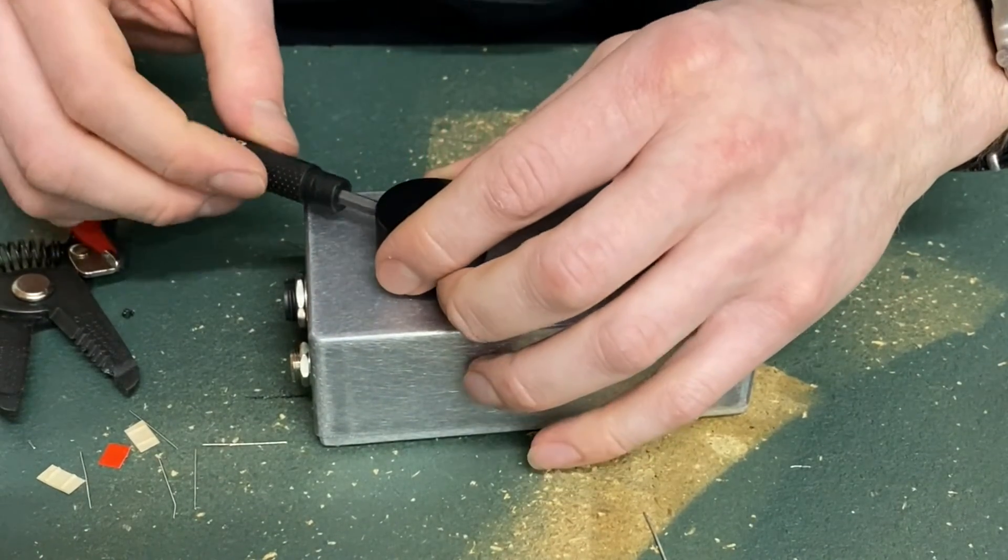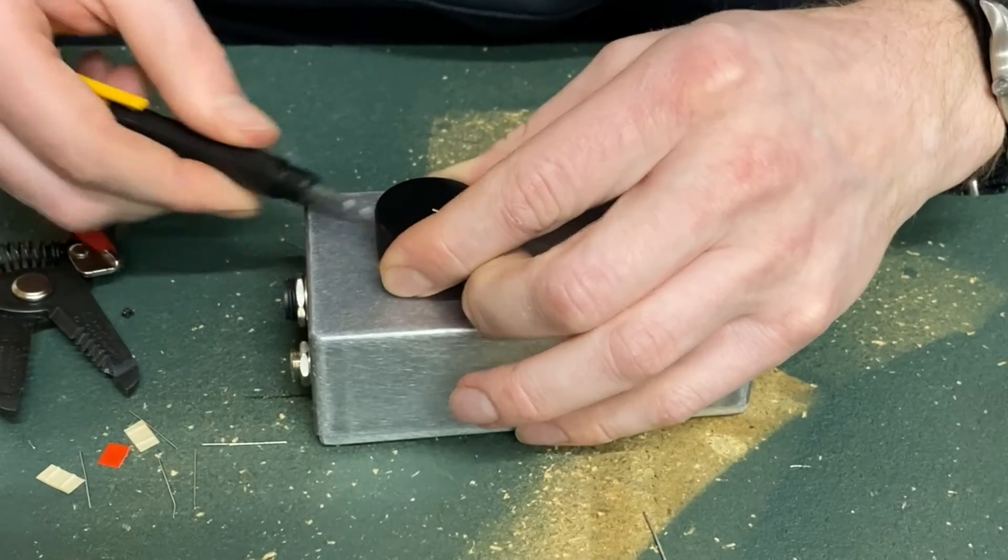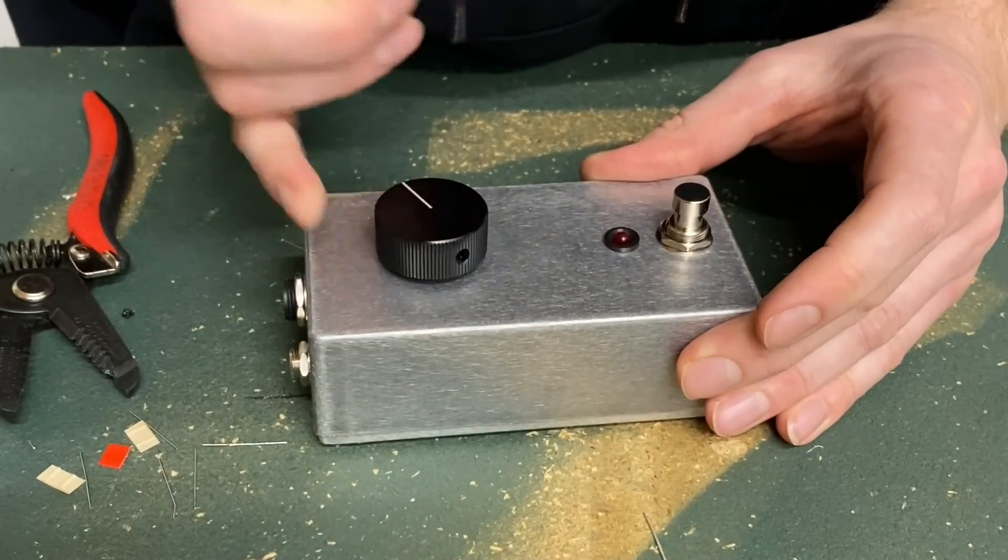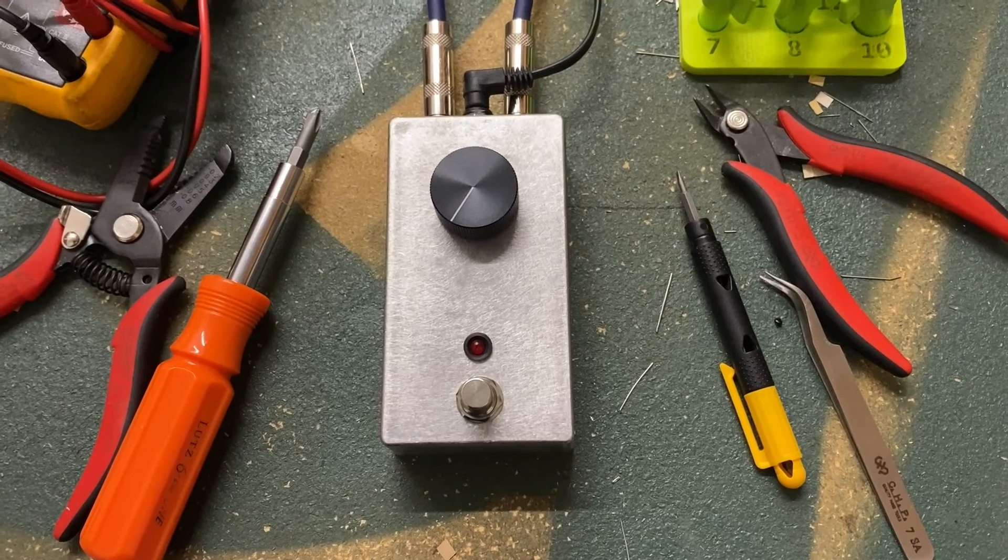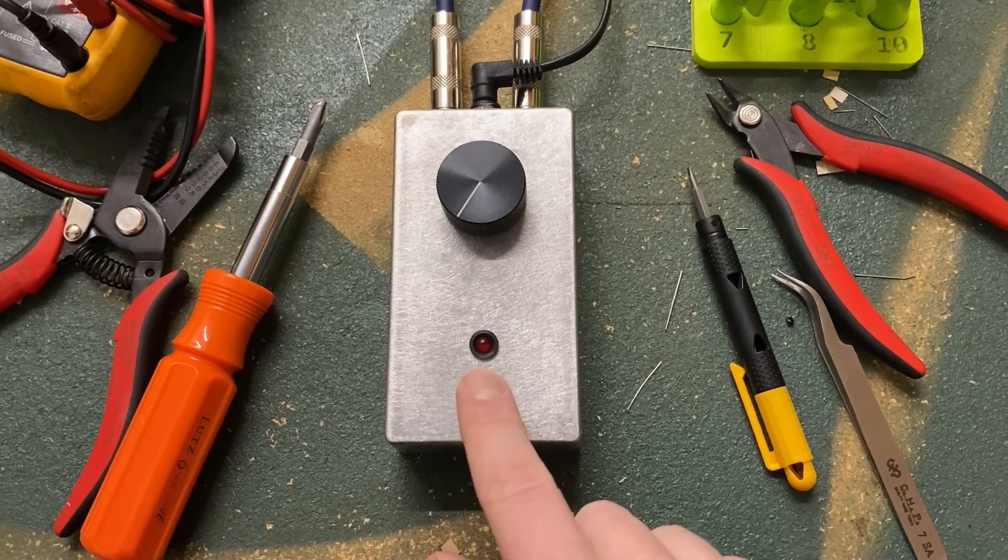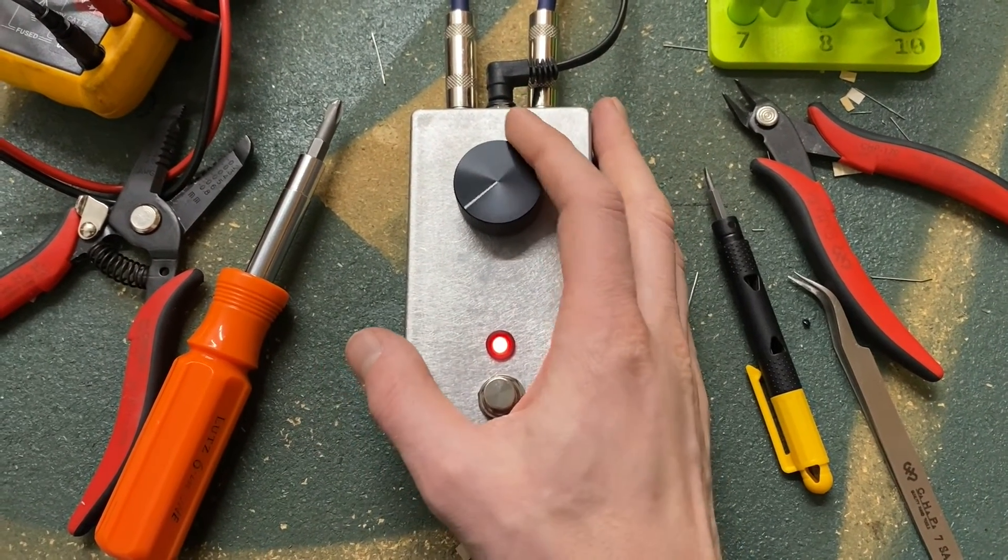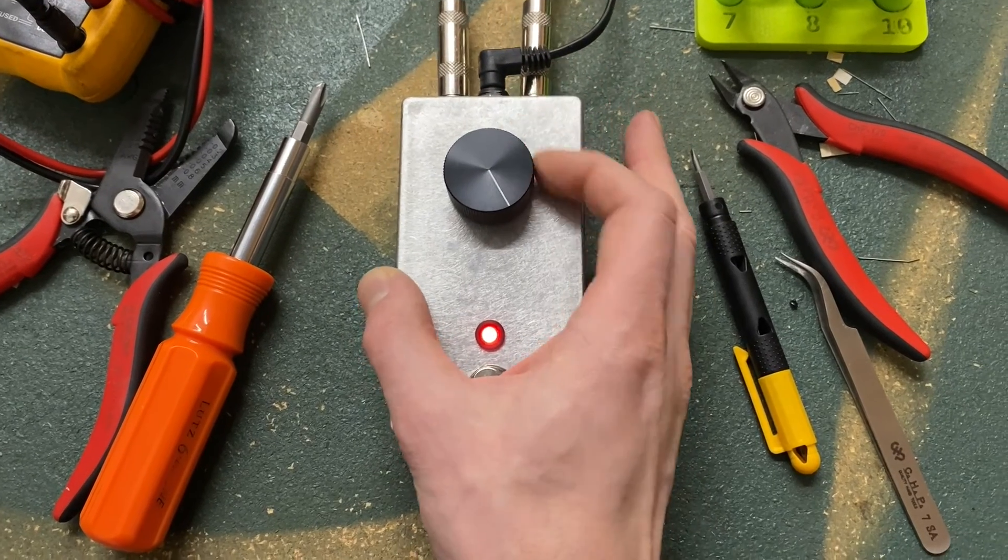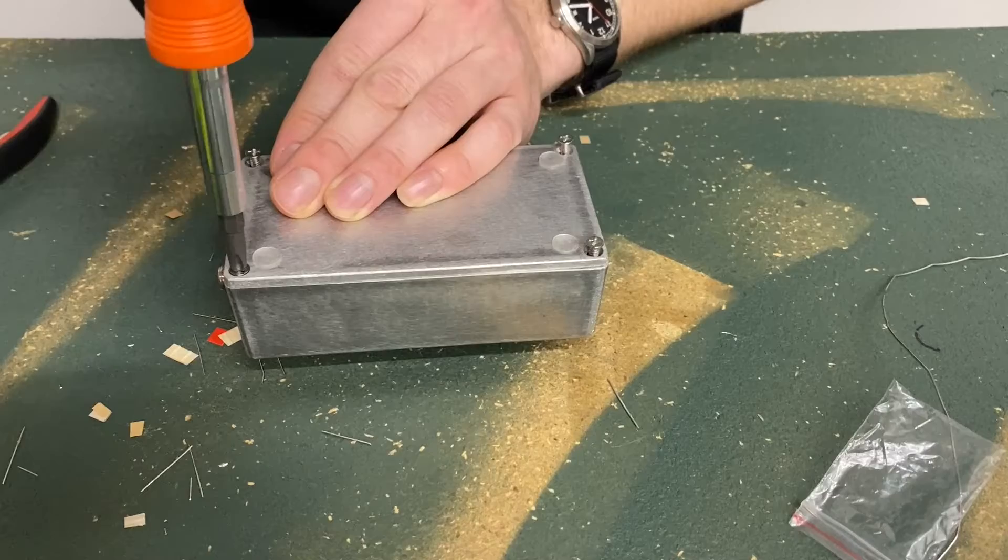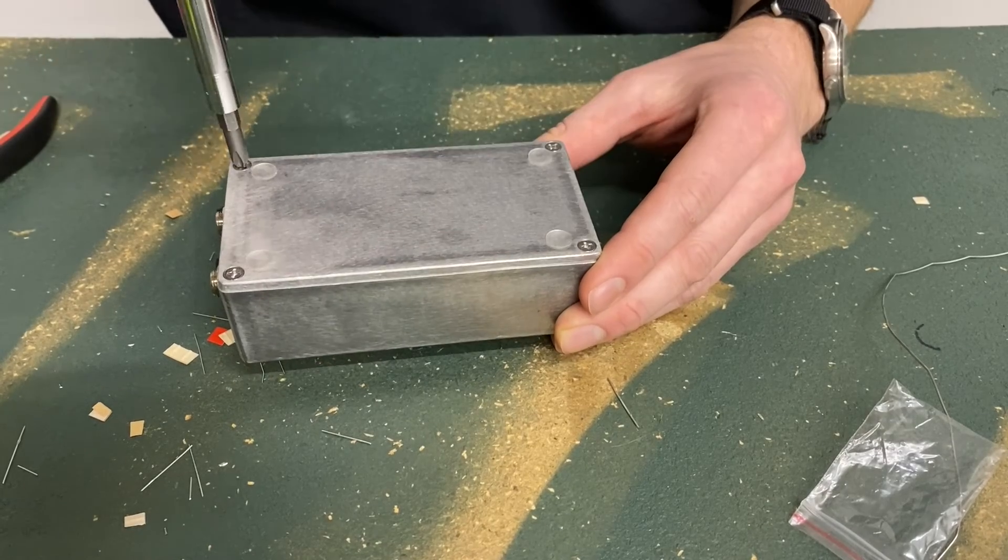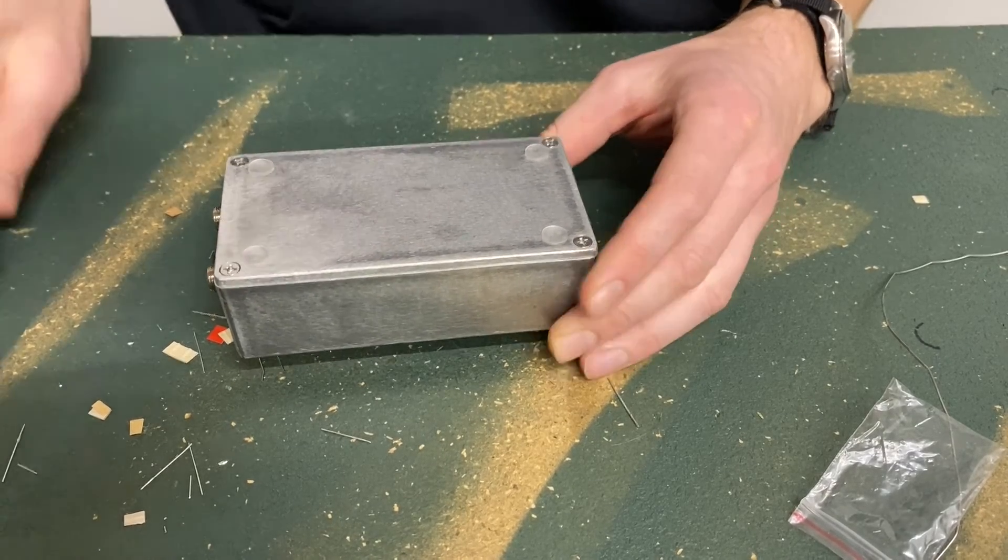Take the knob and tighten it down on the pot with the small flat head screwdriver. Now would be a great time to plug it in and test it out. If signal passes, you successfully built a boost pedal. Nice job. All that's left is to install the lid with the Phillips head screwdriver. And that's it. You are done.